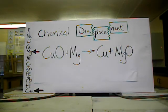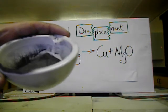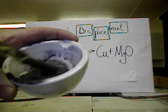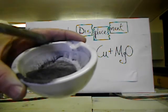And using the pestle, I have ground this to produce a blended mixture of the two chemicals you see on the board: copper oxide and magnesium.